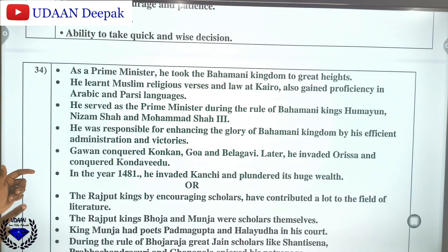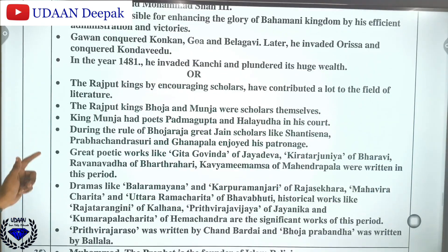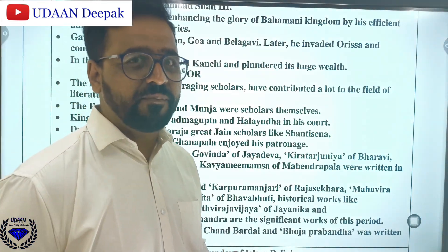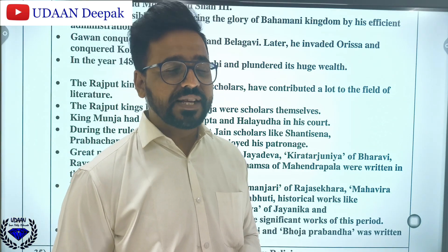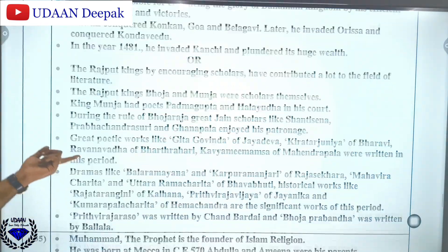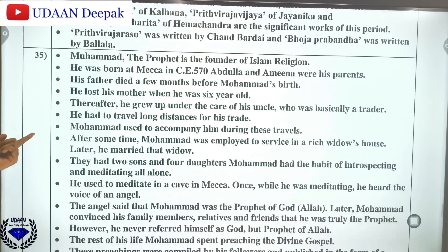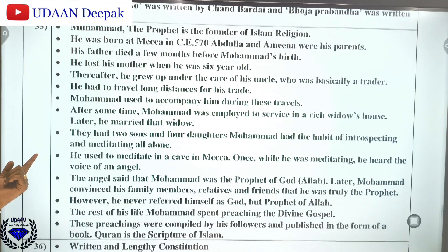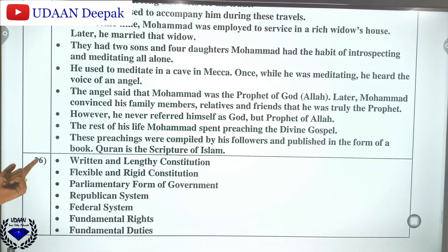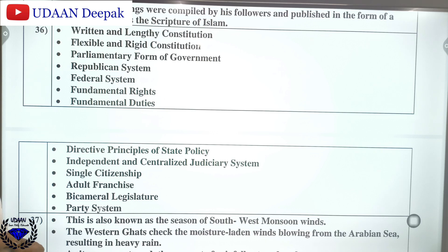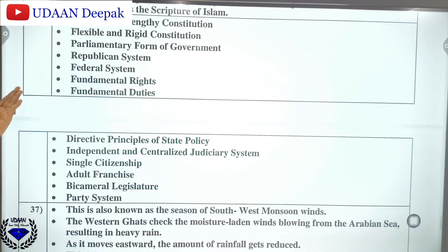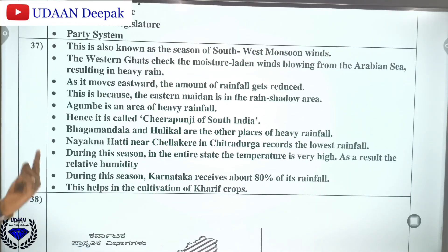Question number 34 you can find here and I will be providing the answers in the description box below. Kindly join the YouTube channel or WhatsApp channel or Telegram in order to get access to the documents. Question number 35 is related to Islam religion. Then the salient features of the Indian constitution: written and lengthy constitution, flexible and rigid constitution, parliamentary form of government, republican system, federal structure, fundamental rights, fundamental duties, and directive principles — all these you should be able to know.